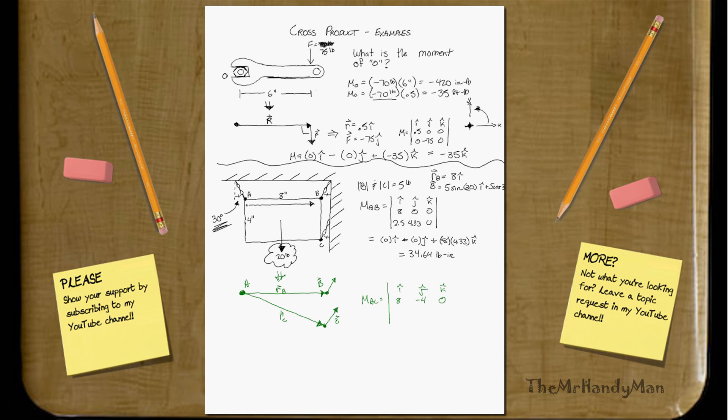People are sitting there going, lost me. Don't worry, we got you right here. We got R_B. That will equal 8I, 8 to the right, minus 4J.